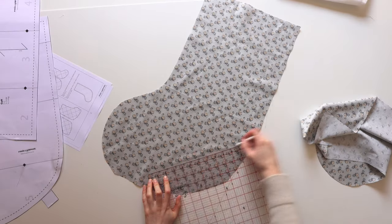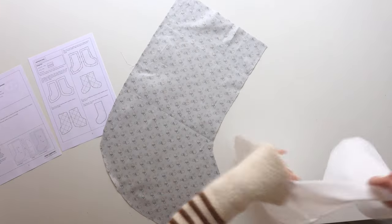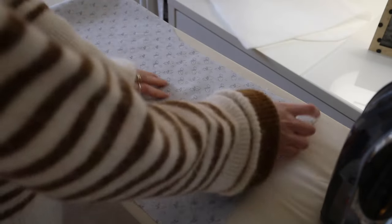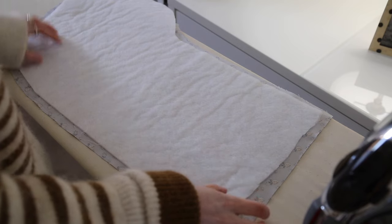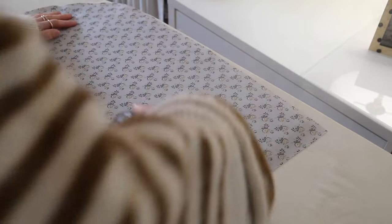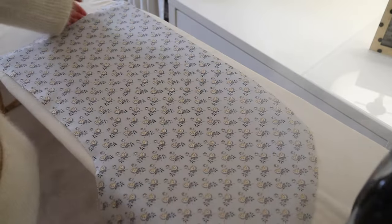So first things first we need to quilt the outer fabric. You can quilt the fabric however you like. I like to do this sort of crisscross pattern so I take some tailor's chalk and mark out lines that are four inches apart. The wadding I use has a fusible side so I fuse it to the back of the outer fabric and give that a good press, make sure it's all nice and stuck on, and then I go ahead and stitch on the quilting.